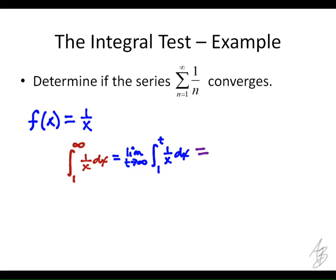And what's the antiderivative of 1 over x? That's the natural log. So I'm just going to continue on this line here. This is going to be simple enough. So the limit as t approaches infinity of the natural log of x evaluated from 1 to t.